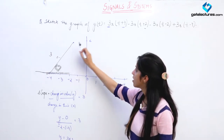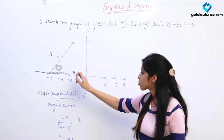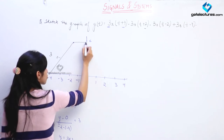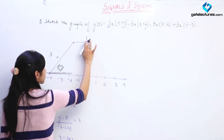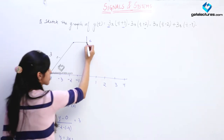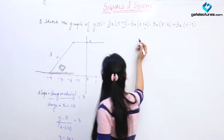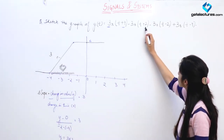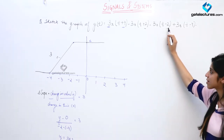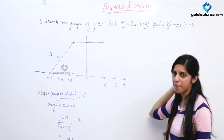Initially slope was 3, now with a change of minus 3 the slope of the line becomes 0. So at T equal to minus 2, slope of the line should become 0, and the value remains the same at 6. The slope of the line is now 0 and will remain so until T equal to 2.